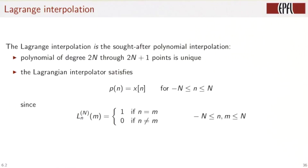Let us summarize what has been achieved. The Lagrange interpolation is a unique solution to the interpolation problem. It satisfies p n equals xn because of the interpolation property of the Lagrange polynomial.